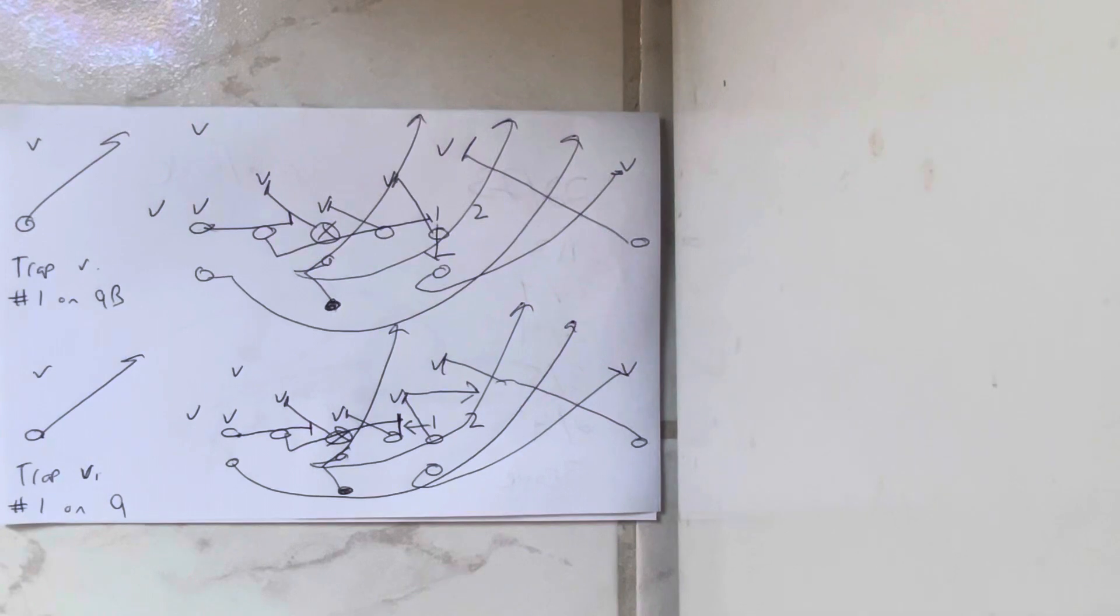And he said we learned that the trap works better when number one is taking the B back. So they started trapping in that situation and they popped a lot of big plays.